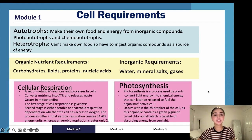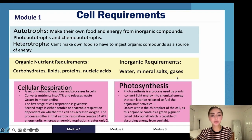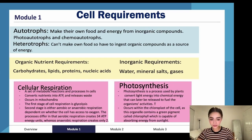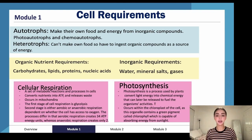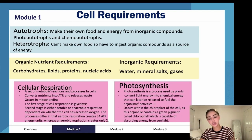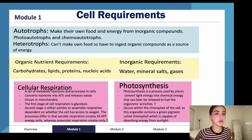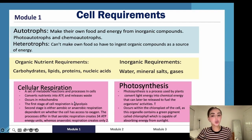Photosynthesis is not used by humans or animals — it's used specifically by plants and some bacteria. The process converts light energy into chemical energy that can later be released to fuel the organism's activities. It occurs within the chloroplast, which contains a green pigment called chlorophyll, capable of absorbing energy from sunlight. The chlorophyll captures the sun's energy and the chloroplast converts it into chemical energy the cell can actually use.